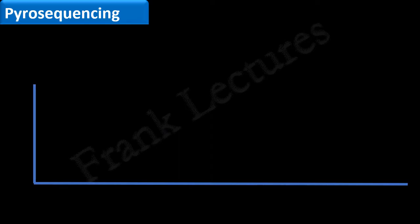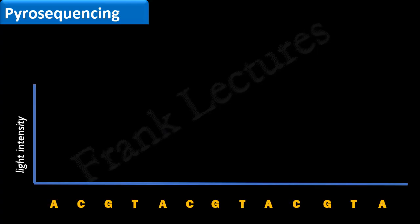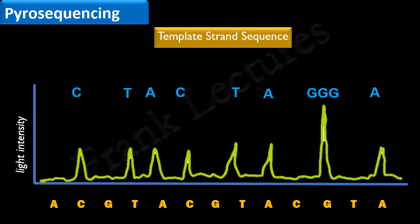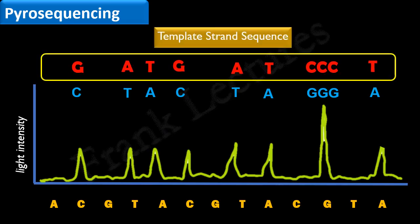Light emission in Pyrosequencing is represented graphically to interpret the sequence. The y-axis of this graph represents the light intensity, and the x-axis represents the sequence in which nucleotides are added. The peaks in the graph give an idea about the number of same nucleotides present in the sequence. The sequence of the strand synthesized during Pyrosequencing is C, T, A, C, T, A, G, G, G, G, A. The sequence of the template strand will be complementary to this. Thus, the sequence of the unknown DNA fragment is found using Pyrosequencing.